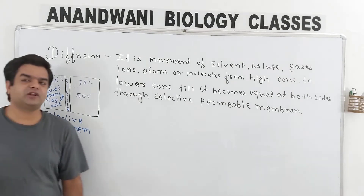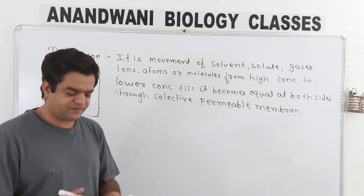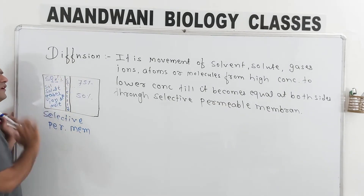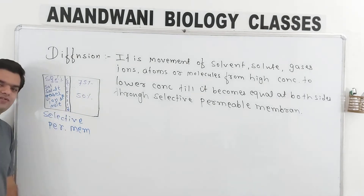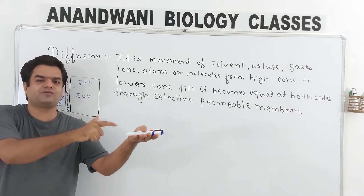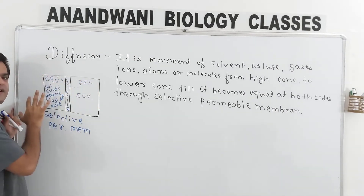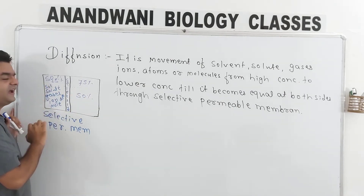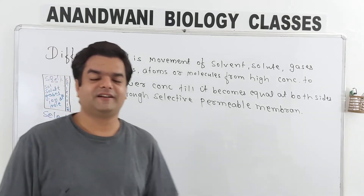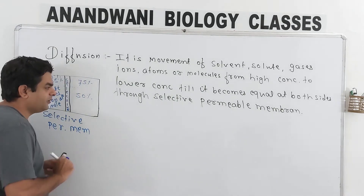When the two sides are not equal, gases, ions, atoms, solute — all things will move from higher to lower concentration. So out of the 75% side, 25% will move toward the 25% side, making both sides 50-50, equal at both sides.